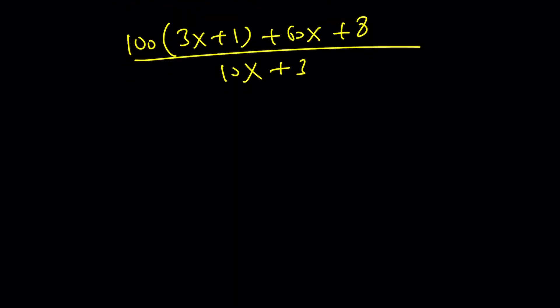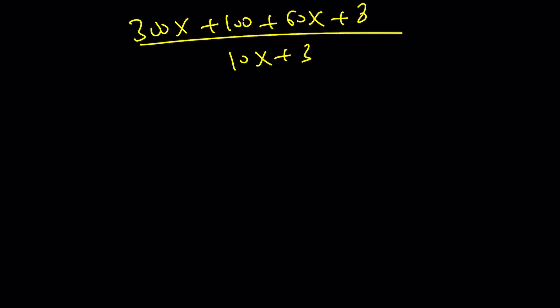This should be nice. Go ahead and distribute. You get 300x plus 100 plus 60x plus 8 divided by 10x plus 3. So, again, we replace x cubed with something linear and then made a common denominator. We got a quadratic and we're doing that again. Here we get 360x plus 108 divided by 10x plus 3.